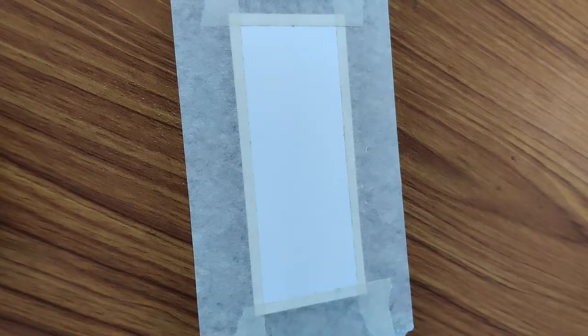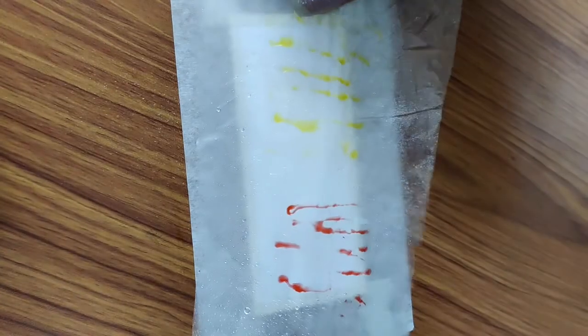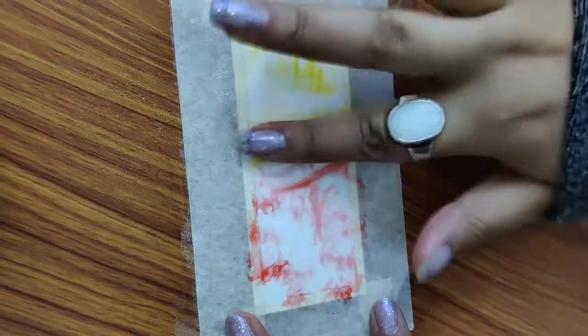Now spray the paper sheet with some water, and take that piece of polythene and place it on top of this paper. Now we're going to spread the color evenly using our finger.